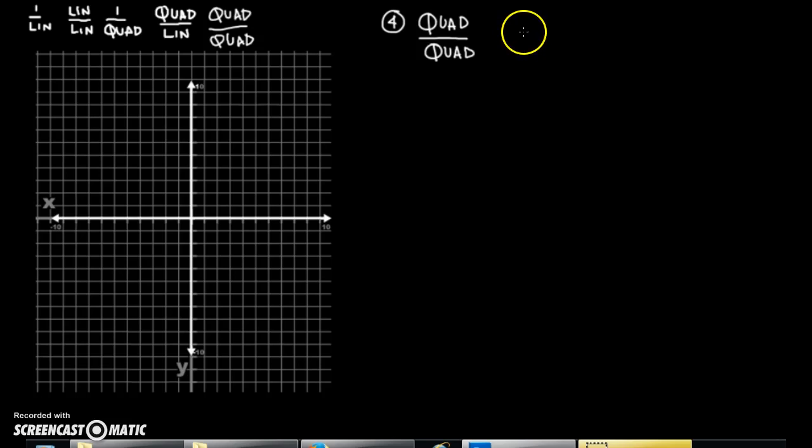Okay. So, once again, similar to the quadratic divided by linear, we're going to have two situations. One in which there is, as you guessed, common factors, and one in which there isn't. So, let's look at the first one. Situation one. Common factors. So, let's see what this looks like. Let's take an equation. Let's say y equals 2x squared plus 7x plus 3 divided by 2x squared plus 5x plus 2.